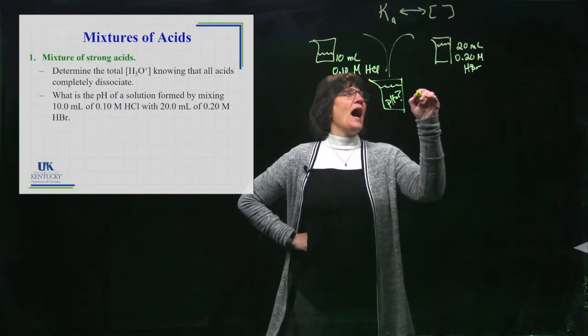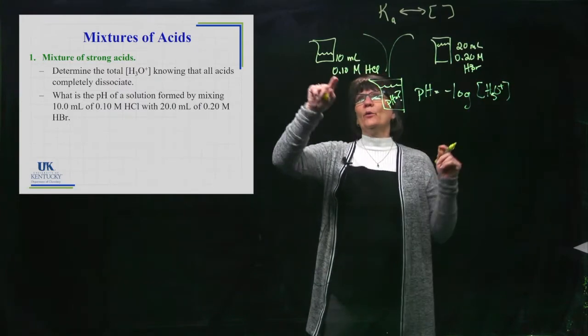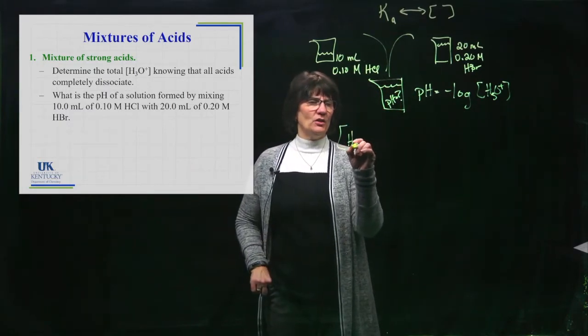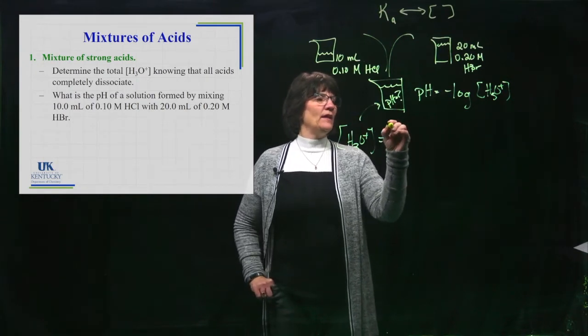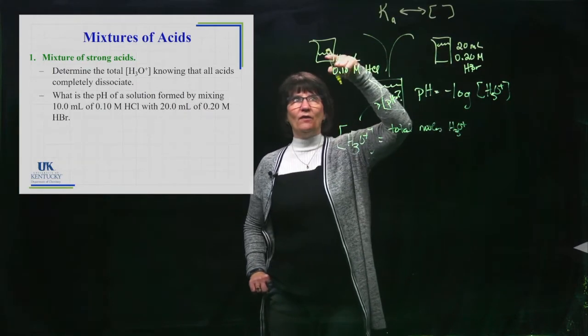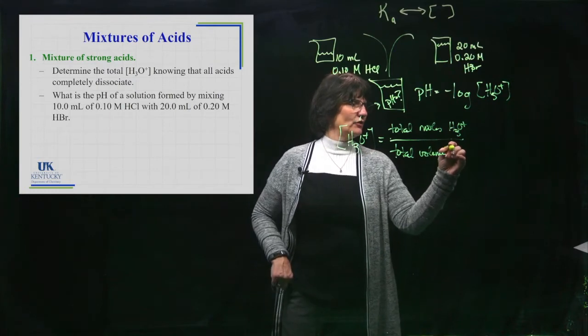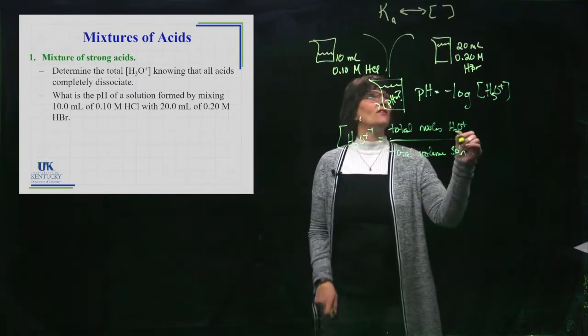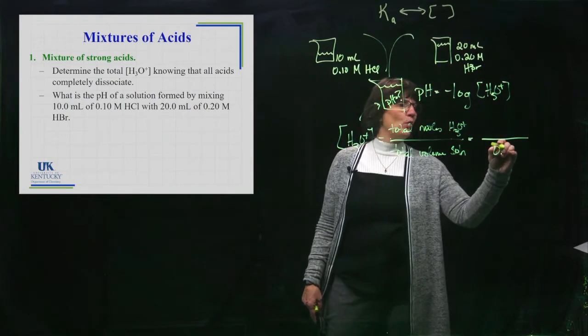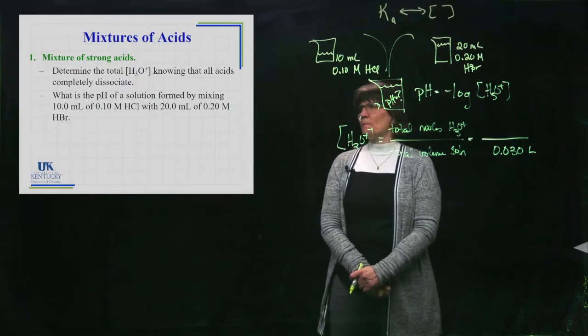In order to get the pH, I need the H3O plus concentration in here. It would be the total moles of H3O plus that came out of this beaker and this beaker and the total volume of the solution in the two beakers. That bottom one's pretty quick and easy. I had 20 milliliters here and 10 milliliters, that's 30 milliliters. I need it in liters, so I have 0.030 liters.